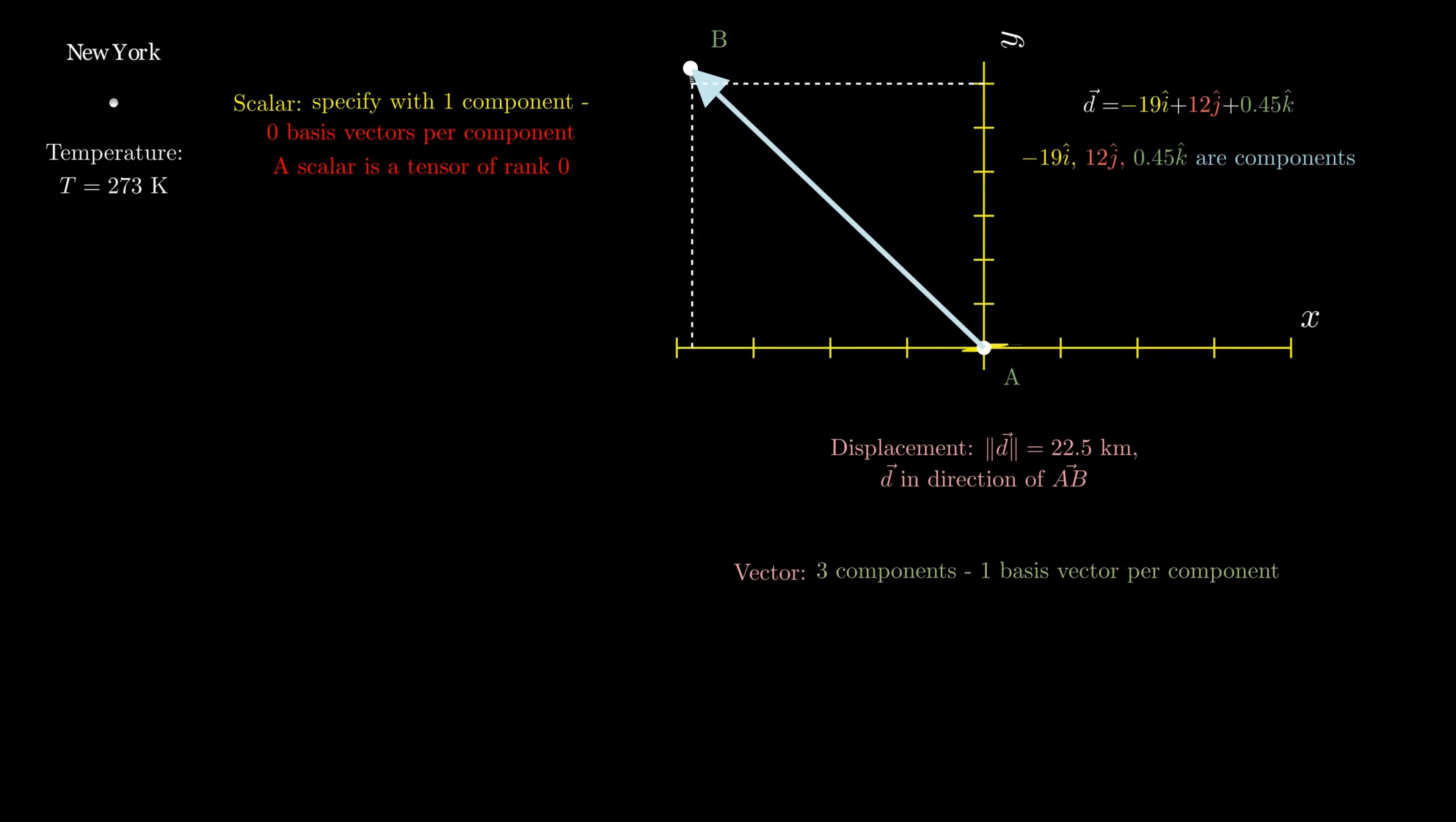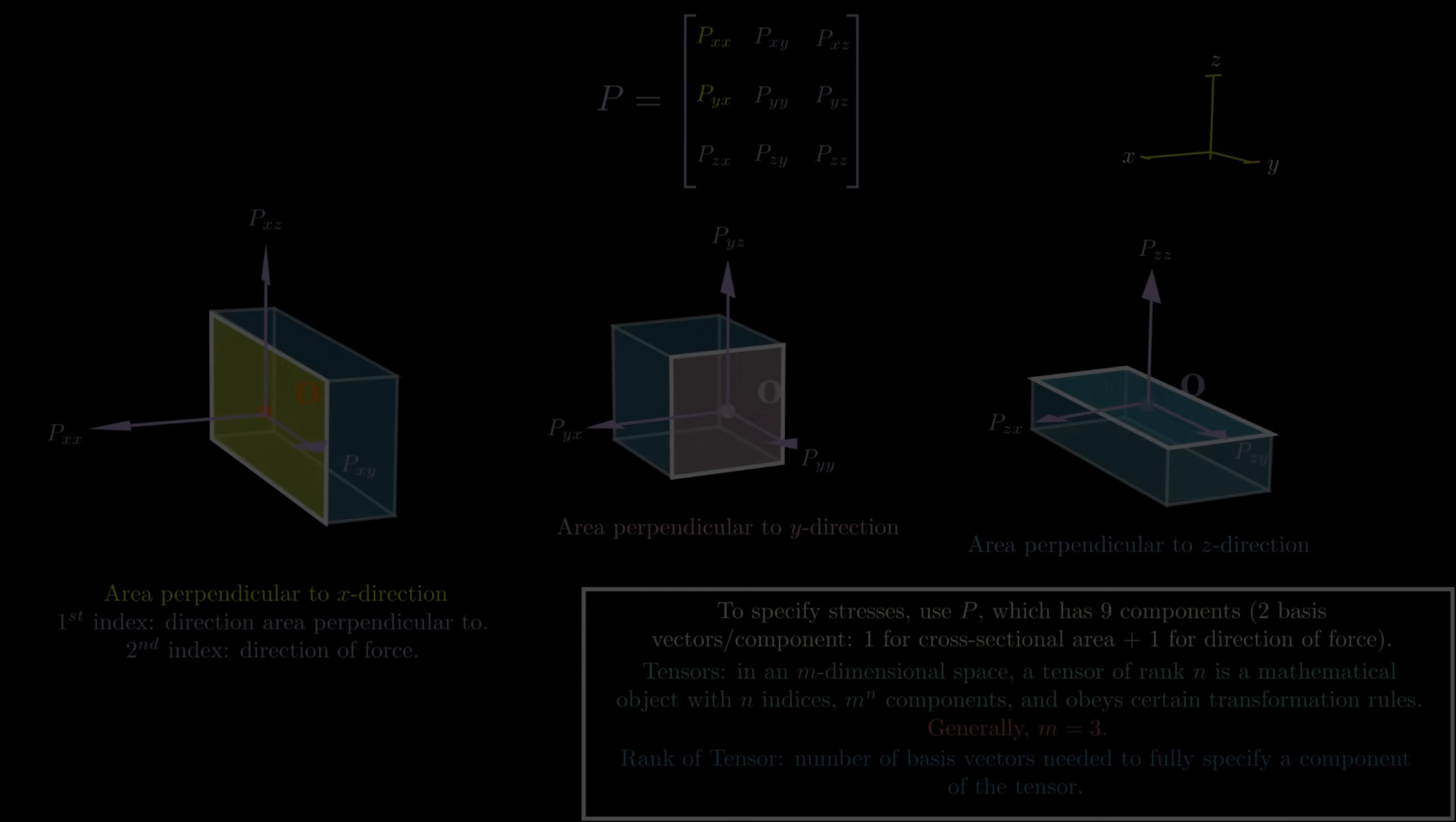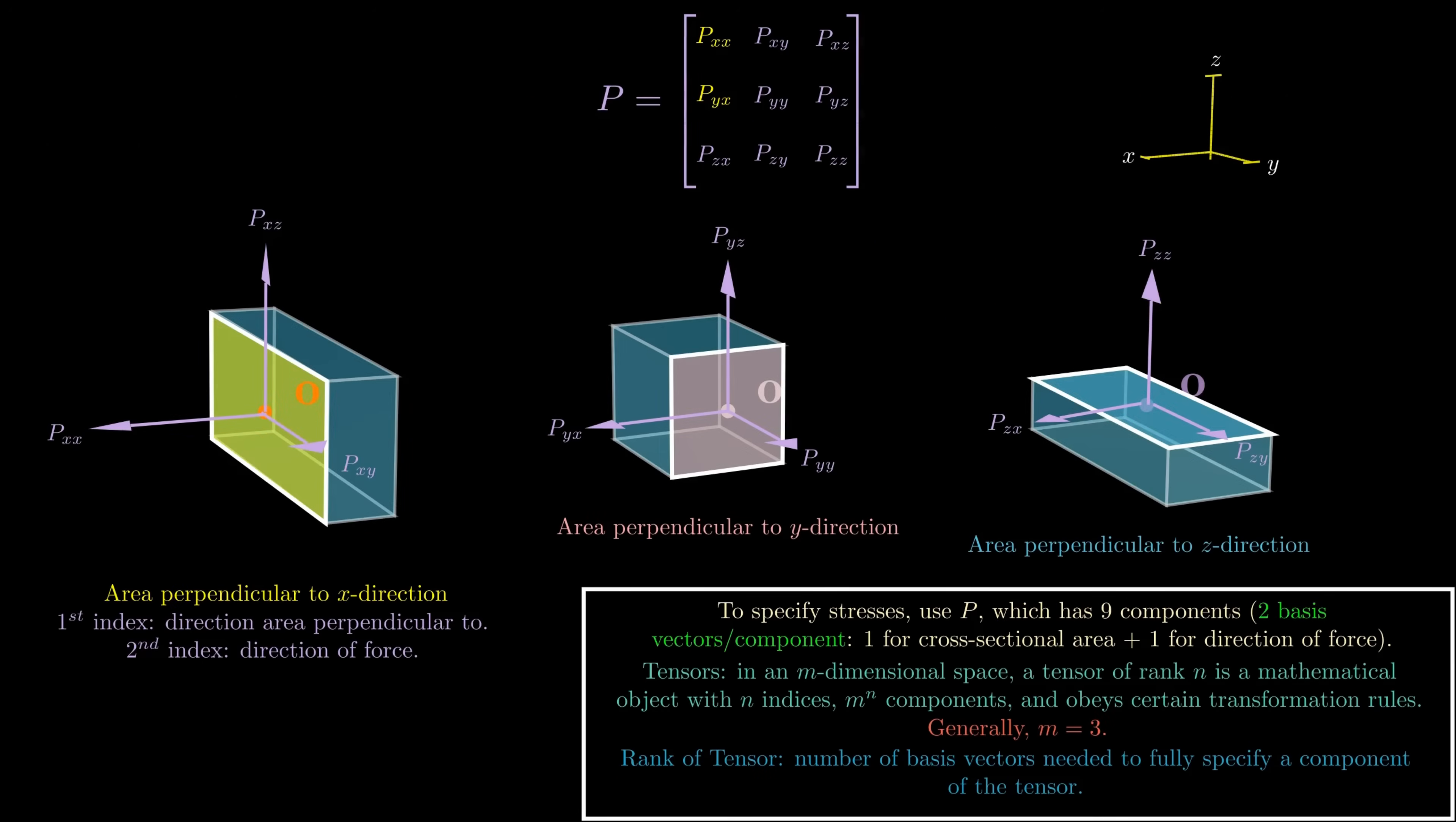Finally, what about our stresses on the beam? Well, I told you that in order to specify each of the nine stress components, you need two basis vectors for each component. One for the area that the stress acts on, and the other for the direction of the force corresponding to that stress. This makes P a tensor of rank two. It's also called a stress tensor.